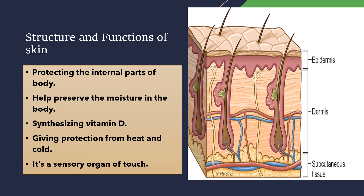The skin protects the internal body parts. It helps to preserve the moisture in the body. The skin also helps in synthesizing Vitamin D from the sun. It gives protection from heat and cold, and it is an important sensory organ of touch.